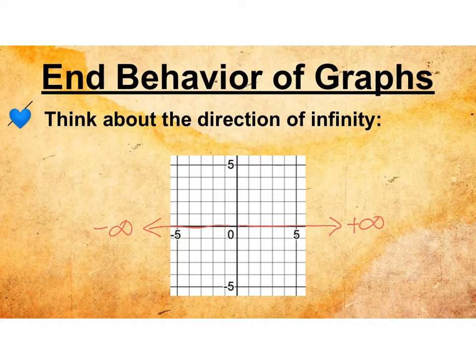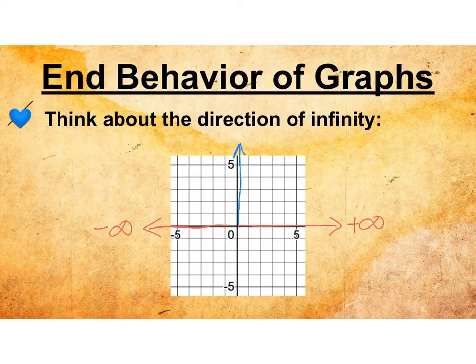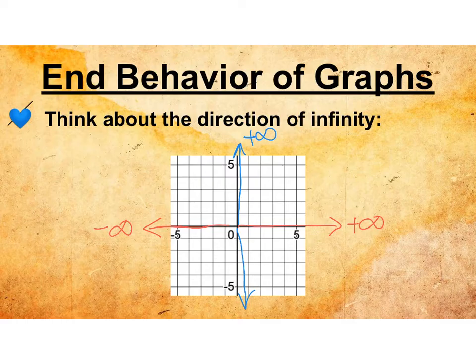When we switch our thinking to y, that's an up and down movement. So y is getting bigger and bigger this way, so that is approaching positive infinity. And as we move down, y is getting smaller and smaller, so it's approaching negative infinity.